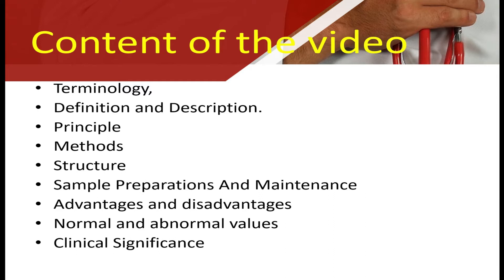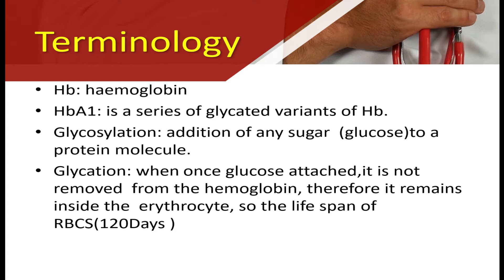HbA1c is one of the common investigations done for diabetes. Few terminologies are important for better understanding of HbA1c. First is Hb, otherwise called hemoglobin. HbA1c is a glycated variant of hemoglobin. We have two terminologies called glycoxylation and glycation.